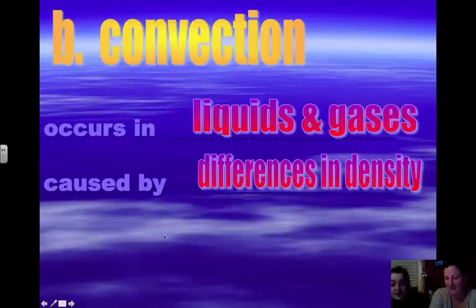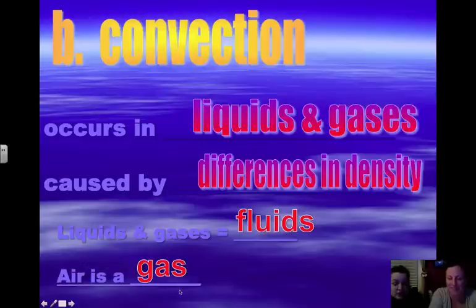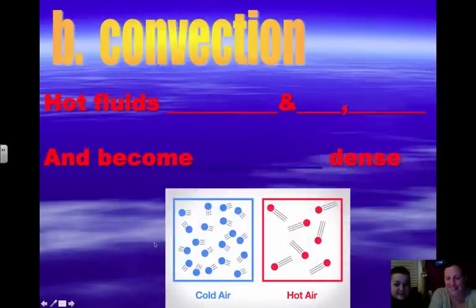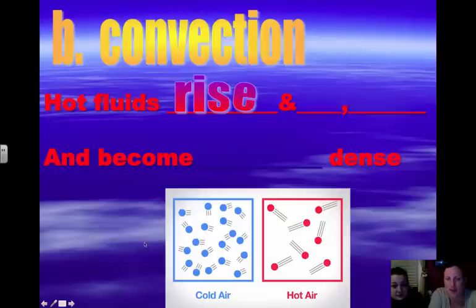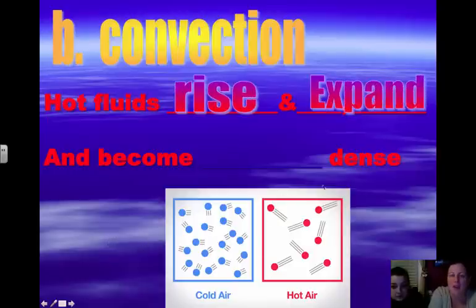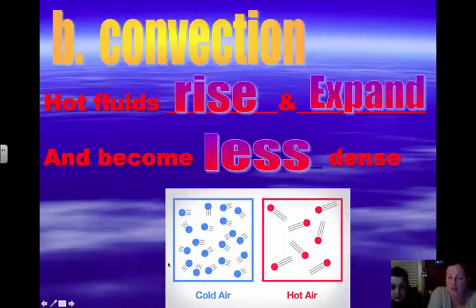Convection is the next one. This occurs in liquids and gases and is caused by differences in density. Liquids and gases equal fluids, and air is considered a gas. Hot fluids rise and expand. Why do they rise and expand? Because things that are hot are less dense. As the molecules of warm air shown in the picture on the bottom expand away from each other, they become less packed together. Less packed molecules means they are less dense.